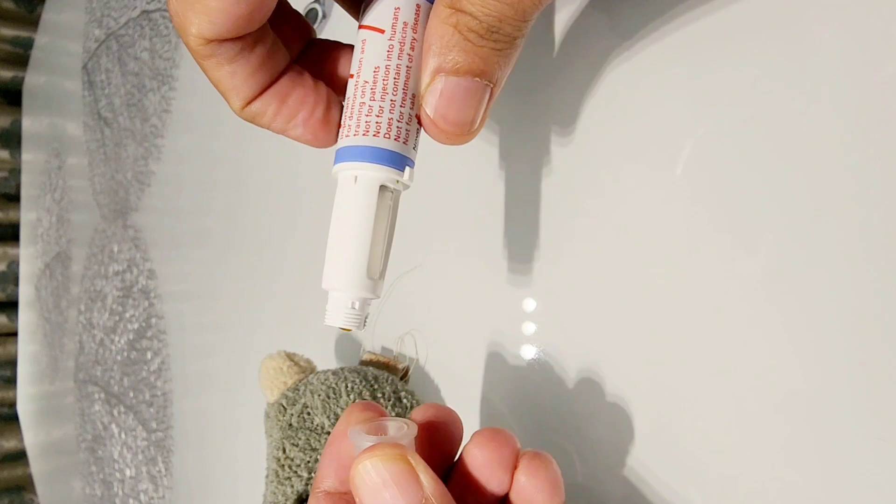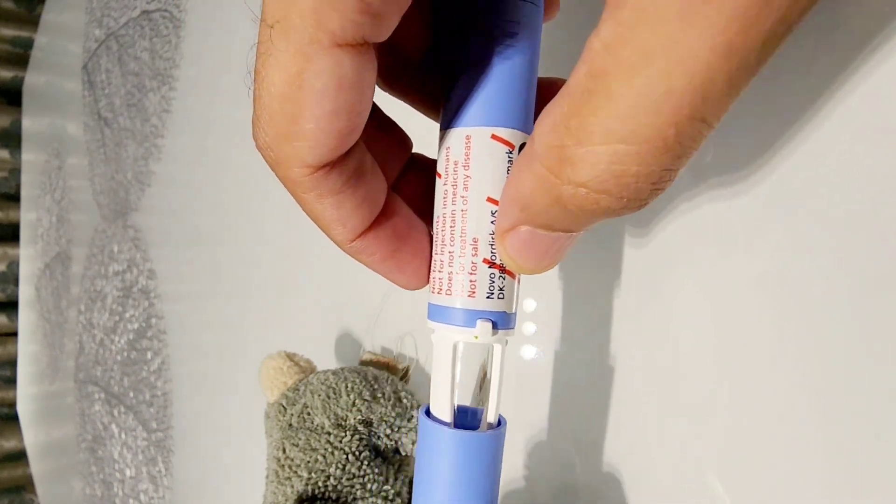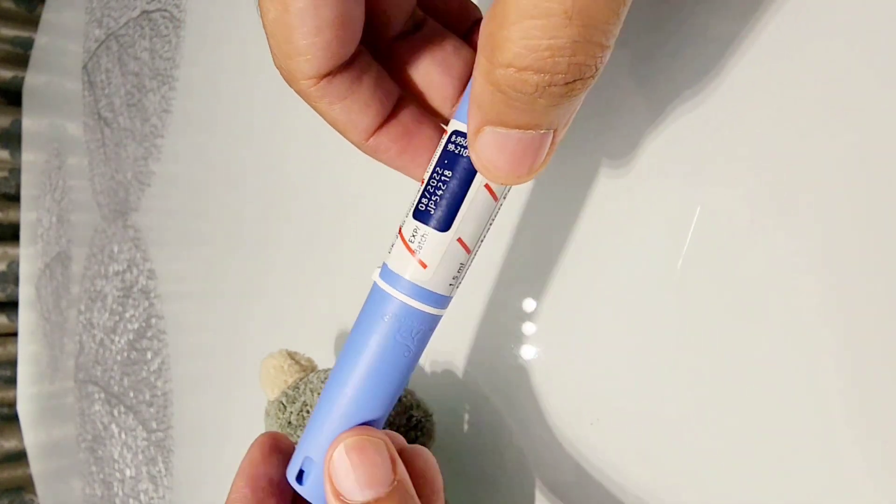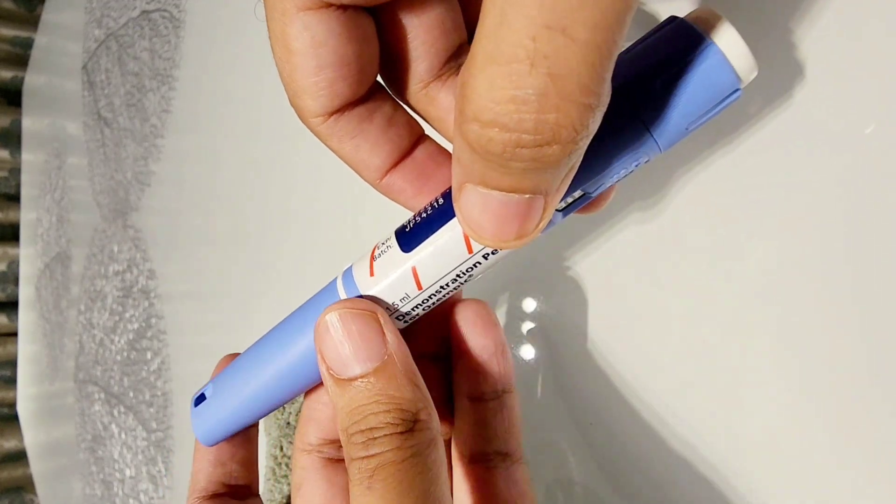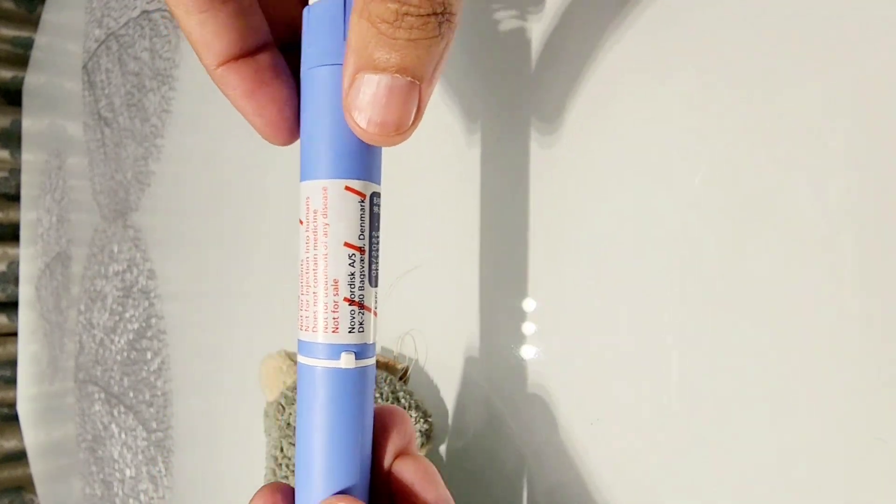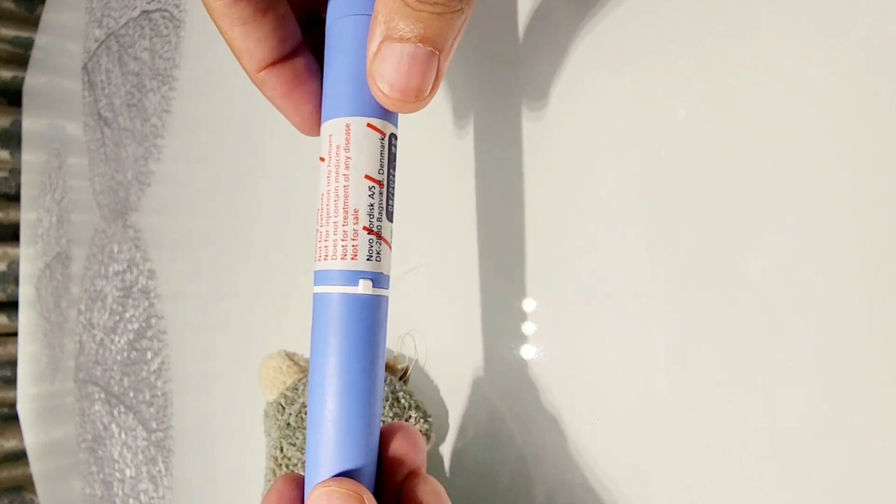Every time you should use a new needle, the pen should be kept in the fridge with a cap on it. Not in the freezer. In the door of your refrigerator so it doesn't get frozen.